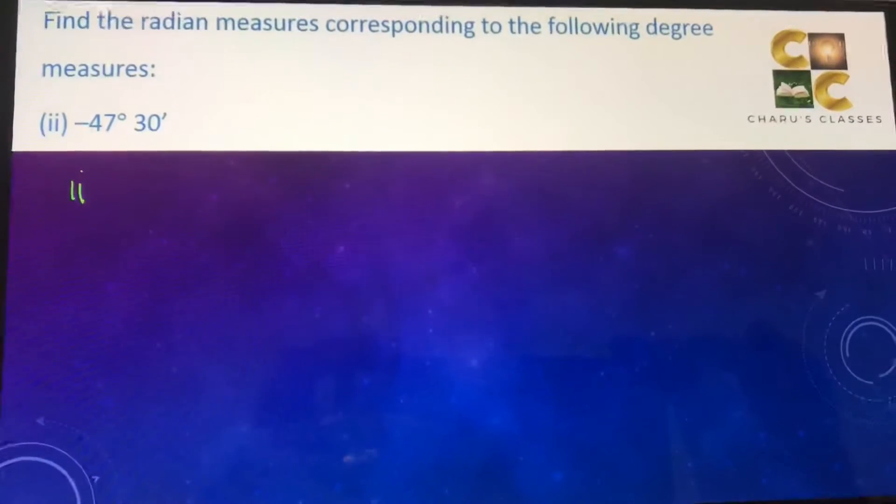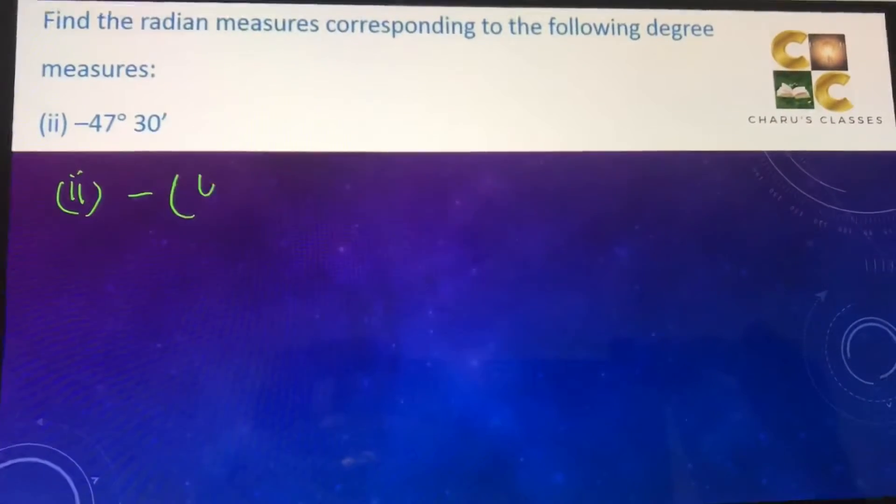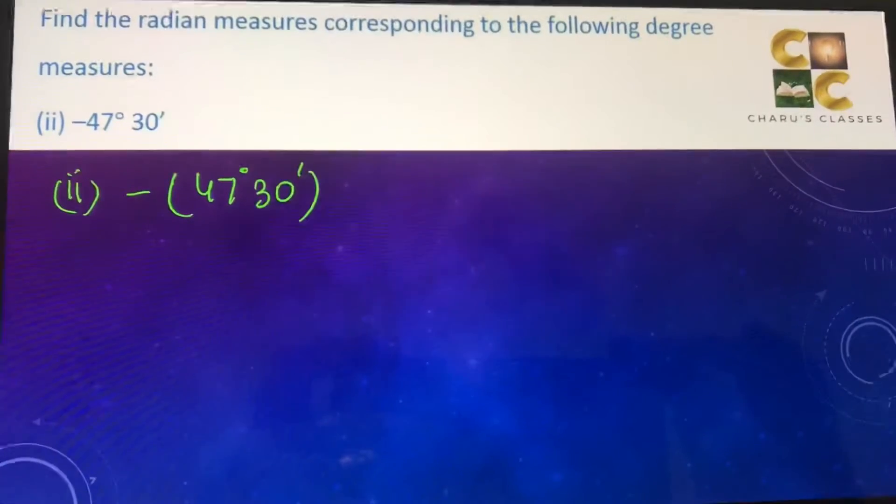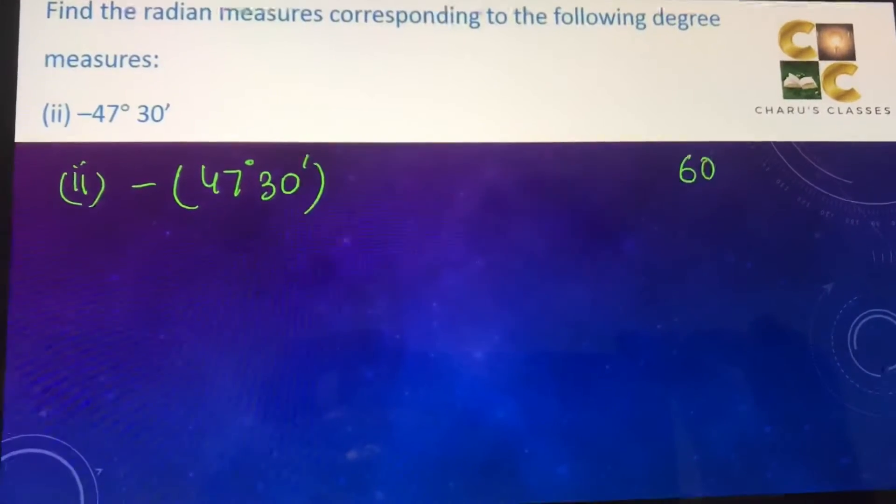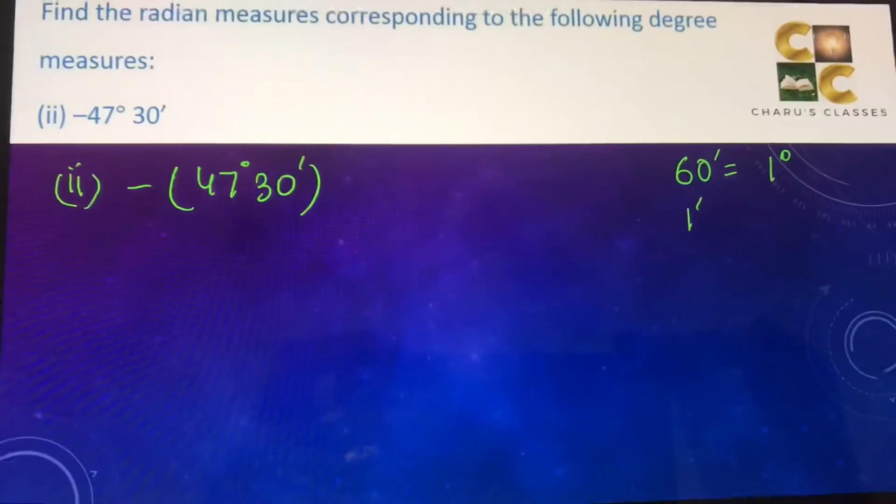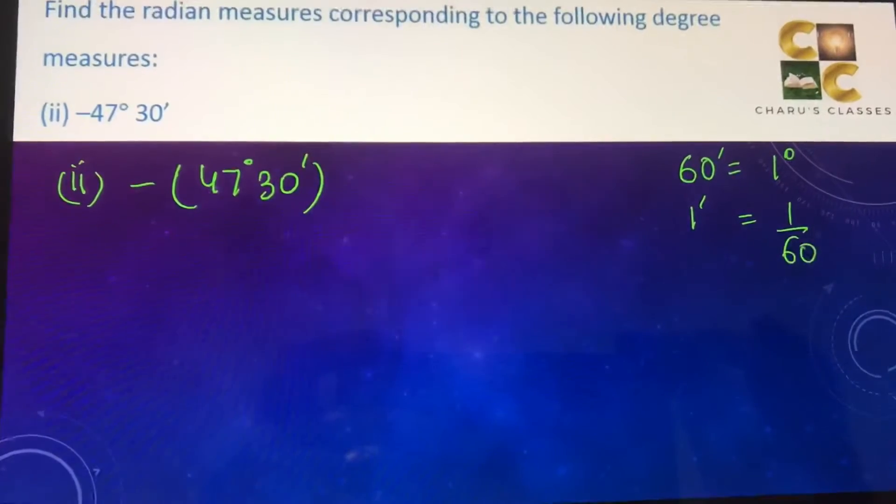Second part: minus 47 degrees 30 minutes. Now we know that 60 minutes is equal to 1 degree, so 1 minute can be written as 1 by 60 degrees.